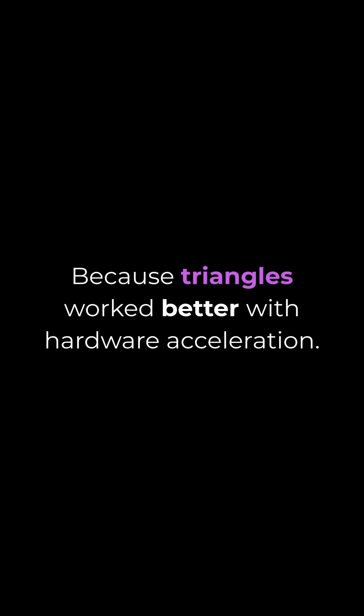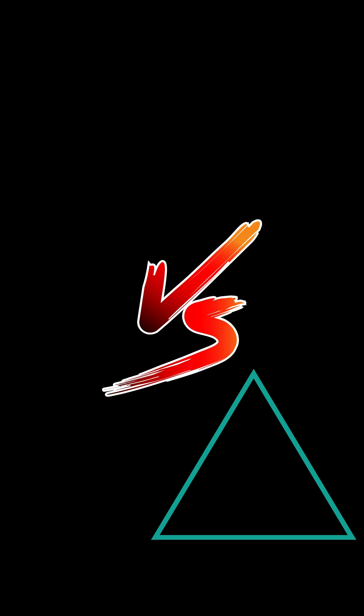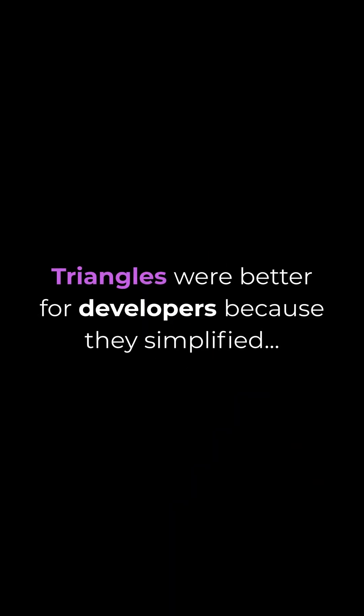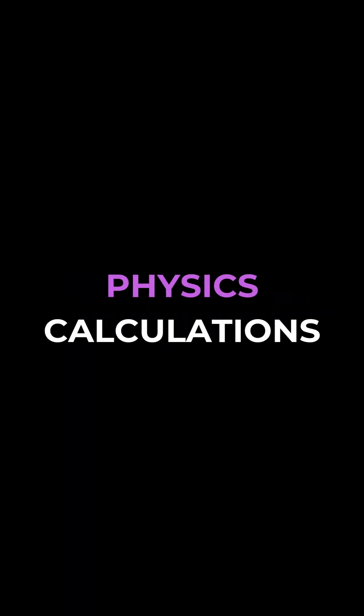But this choice — quadrilaterals versus triangles — didn't just have effects on the hardware. It had effects on the game developers as well. Triangles were better for developers because they simplified modeling, animation, and physics calculations.